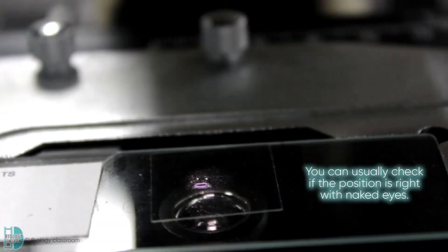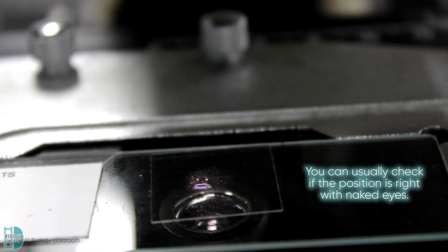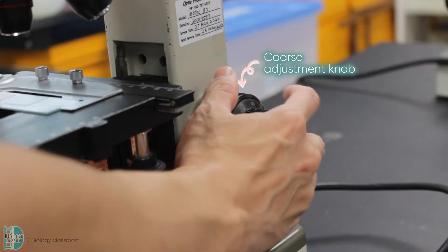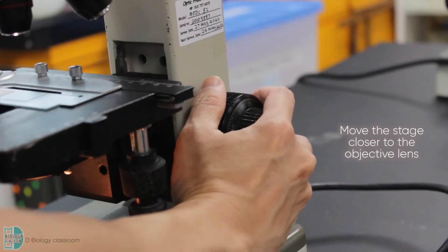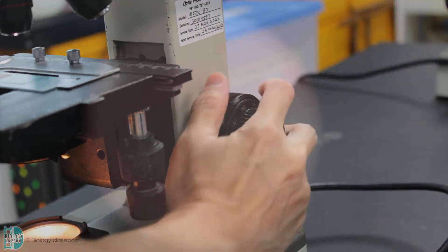Just use your naked eyes to check if the position is right. This ensures your specimen is right below your objective lens. You can now look into the eyepiece. Use the coarse adjustment knob to bring the stage closer to the objective lens. Keep looking into the eyepiece and adjust the stage until you can see the specimen.